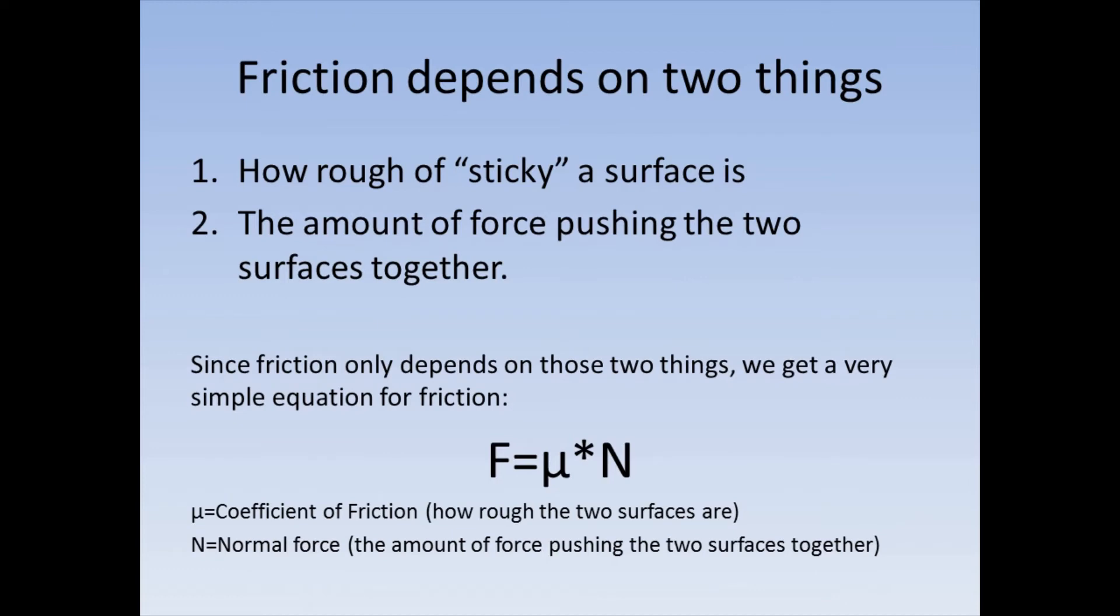Friction only depends on two things. The first thing it depends on is how sticky, or how rough, a surface is. And the second thing it depends on is the amount of force that's pushing the two surfaces together. Since friction only depends on those two things, we get a really easy equation, because the equation only involves those two variables.